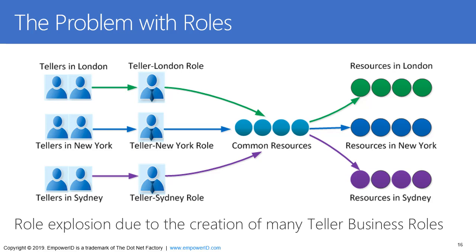You end up with a bank teller role for every combination — every region, every city ends up with its own bank teller role. So instead of having one bank teller role which helps the organization define access, you end up with thousands of bank teller roles, which increases the administrative burden. This is what's often known as role explosion or role bloat, and it's one of the primary reasons that organizations shy away from RBAC.